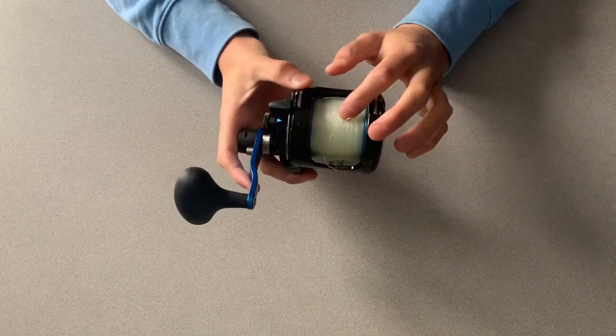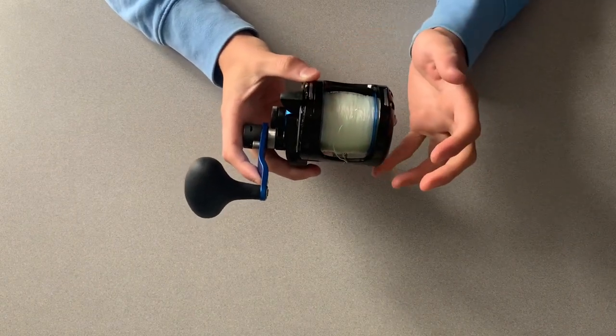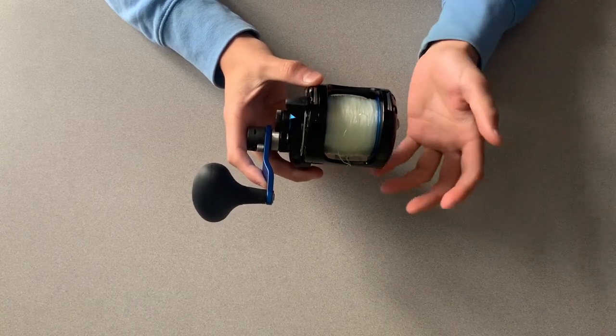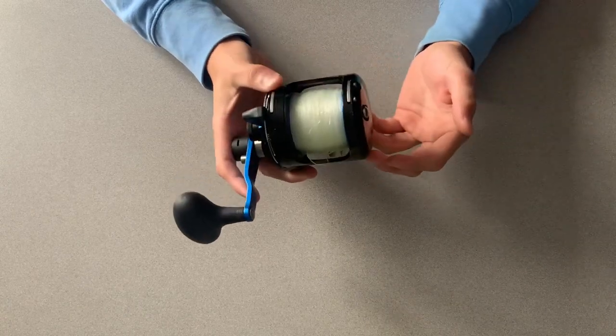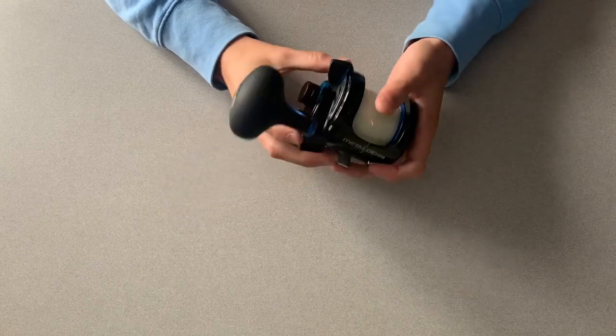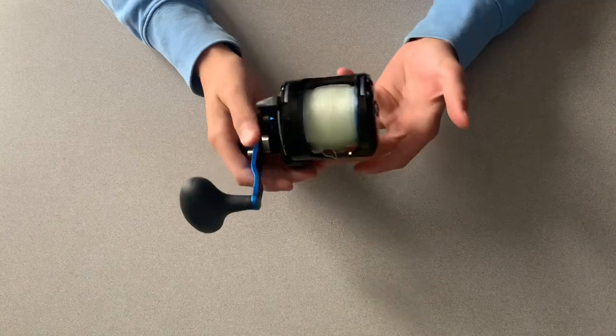The line capacity on this reel: 30 pound mono has about 320 yards, and if you're looking to put 80 pound braid, it holds about 350 yards of it. So for a reel this size, if you're going to buy a reel this size, just know what to expect with the line capacity. But it's still a pretty good reel.